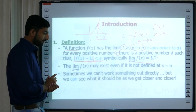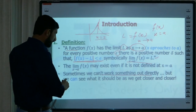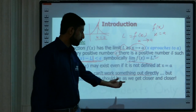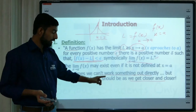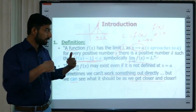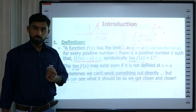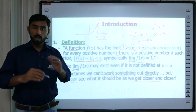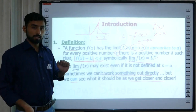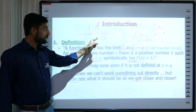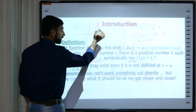Limits ka matlab yahan pe mention hai: 'Sometimes we cannot work something out directly' — jo cheezein directly nahi pohanch sakte — 'but we can see what it should be as we get closer and closer' — jaise us cheez ke muqarib jaenge, humen us ka behavior ka idea ho jaaye ga. Agar aap direct kisi cheez ka pata nahi laga sakte, to aap us ke baare mein guess karte hain, us se qareeb tareen cheezoon ko approach karte hain. For example, daily life mein: agar aap kisi person ko nahi jaante, to aap kya karte hain? Jo us ke qareeb tareen hain, un se us ki opinion lete hain. Bilkul isi tarah functions mein bhi aise functions hain jin ki value aap kisi x pe evaluate na kar sakein — jaise x is equal to 2 pe infinity ja raha hai — to hum us ke bilkul qareeb qareeb approach karte hain.